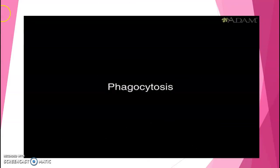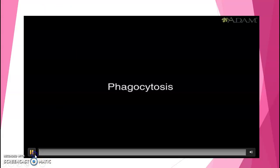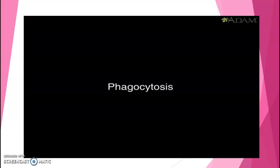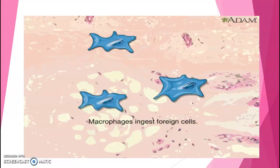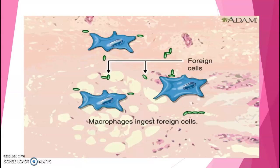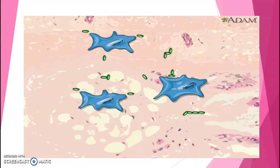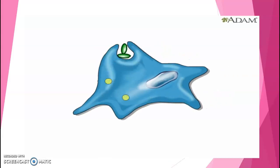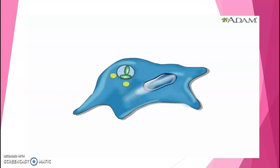Phagocytes eventually die; pus is formed from a collection of dead tissue, dead bacteria, and alive and dead phagocytes. These amoeba-like cells are a type of phagocyte called macrophages — scavenger cells that can form tentacles called pseudopods to surround and ingest foreign cells. Once swallowed, the cells are walled off and destroyed by digestive enzymes.